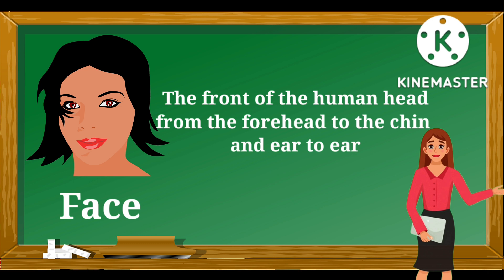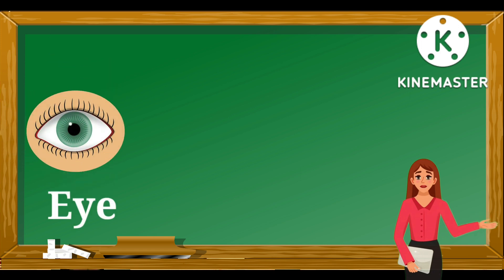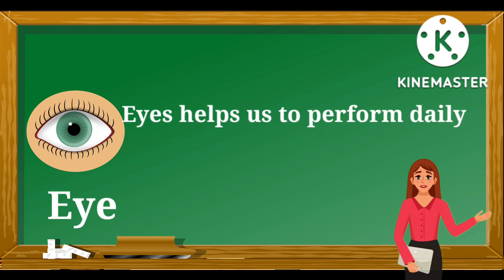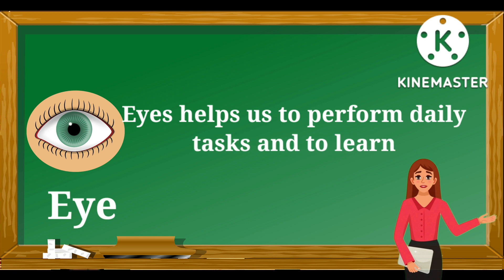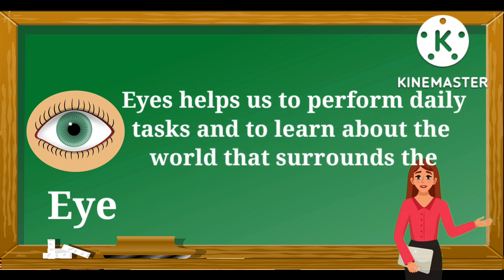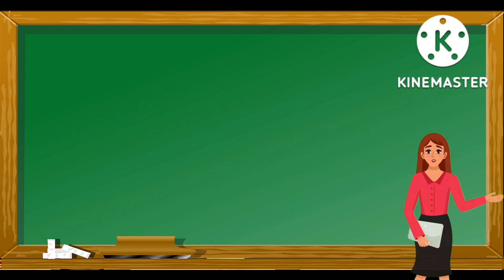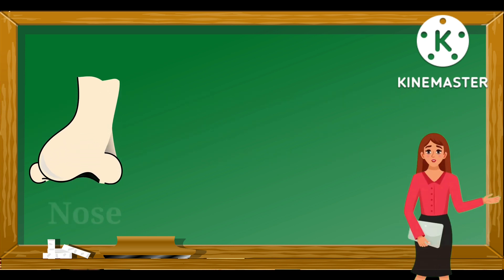This is an eye — E-Y-E. Eyes make color vision possible. Eyes help us to perform daily tasks and to learn about the world that surrounds us.